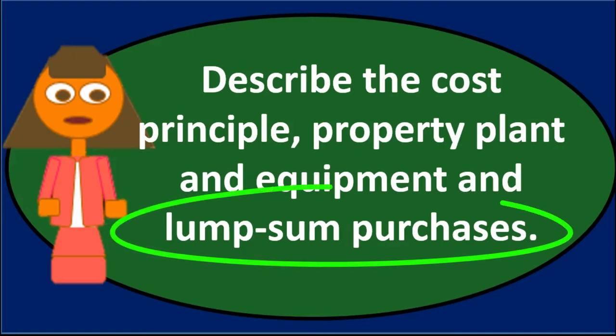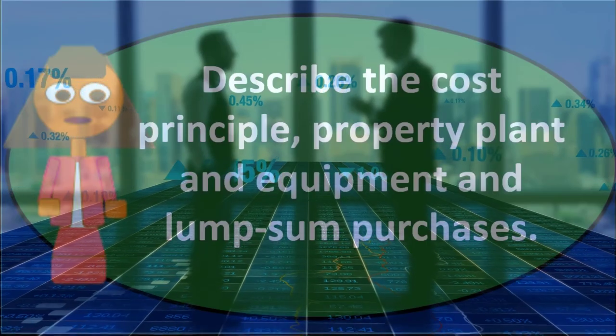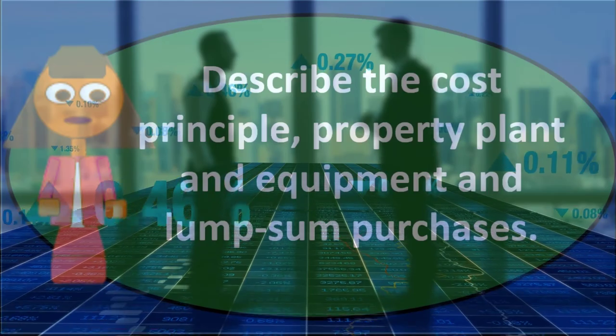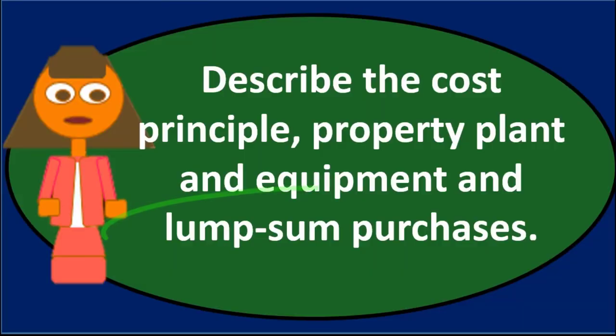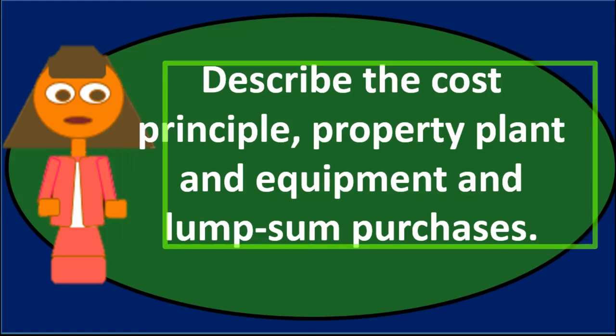Even if the appraisal doesn't match the purchase price, we can use a ratio analysis to figure out the breakout between the components of the lump sum purchase, such as a building and land, and break that information out into its component parts.